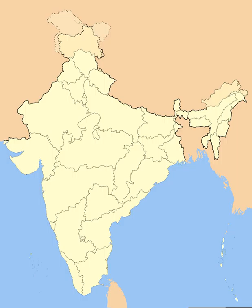Kerala was created with the merger of Malabar district and the Kasaragod Taluk of South Canara districts of Madras state with Travancore-Cochin. Mysore state was reorganized with the addition of districts of Bellary and South Canara (excluding Kasaragod Taluk) and the Kollegal Taluk of Coimbatore district from Madras state, the districts of Belgaum, Bijapur, North Canara, and Dharwad from Bombay state, the Kannada-majority districts of Bidar, Raichur, and Gulbarga from Hyderabad state, and the province of Coorg. The Laccadive Islands, which were divided between South Canara and Malabar districts of Madras state, were united and organized into the union territory of Lakshadweep.